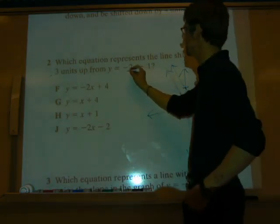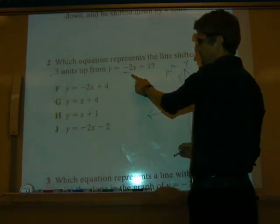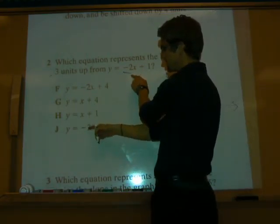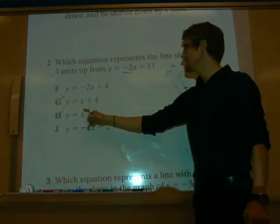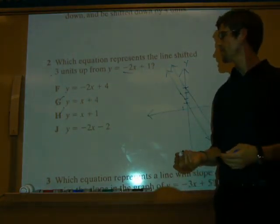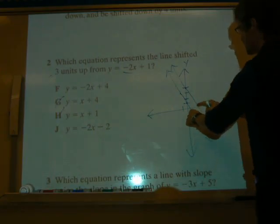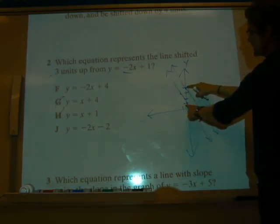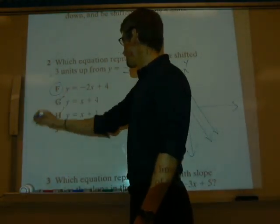Does the slope change? No. So it should have a negative 2 slope. Therefore, negative 2, negative 2. We can go ahead and mark out G and H because in G and H, the slope has changed. The only difference is instead of it crossing at positive 1, it's going to cross at positive 1, 2, 3, 4. So our correct answer is F.